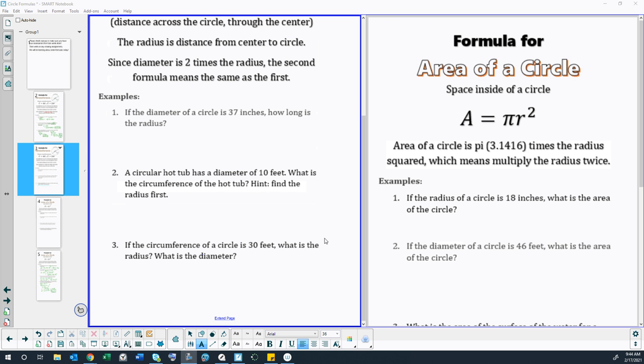Okay, let's go through these examples. If the diameter of a circle is 37 inches, how long is the radius? So this particular question isn't even asking us for circumference. It's simply asking us to find the radius from the diameter. So remember the diameter is twice as long as the radius. So to find the radius from the diameter, all we have to do is divide by two. So 37 divided by two, grabbing a calculator if you need to, what do you get? 18.5. And since 37 is in inches, the radius would be 18.5 inches.